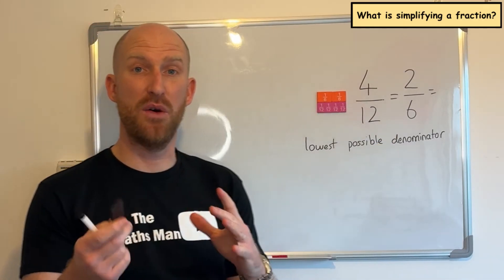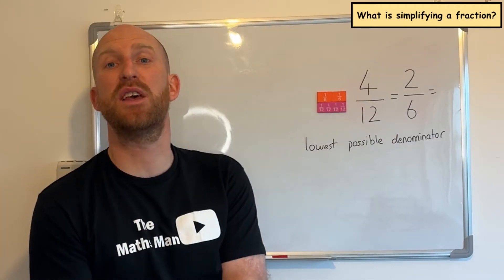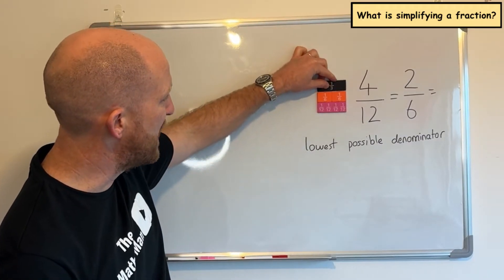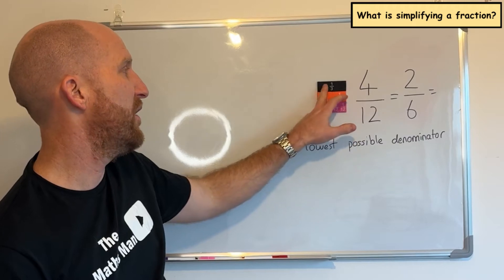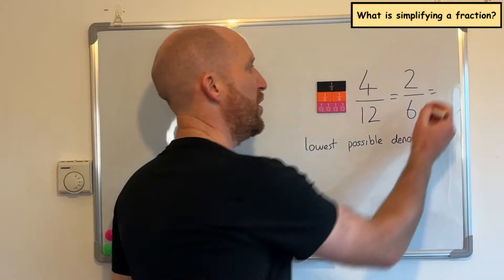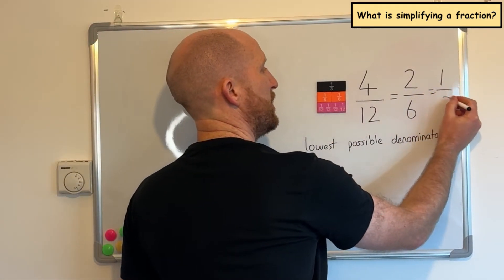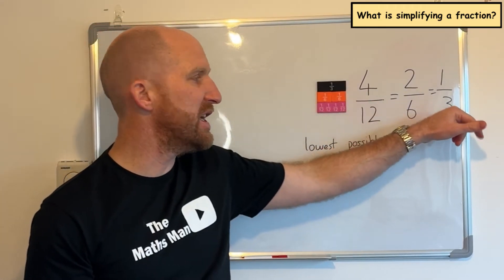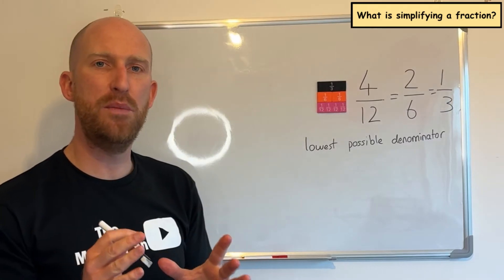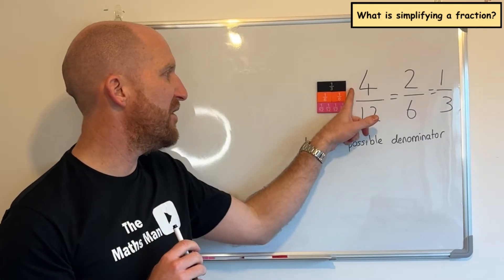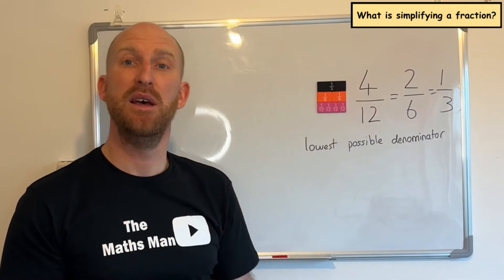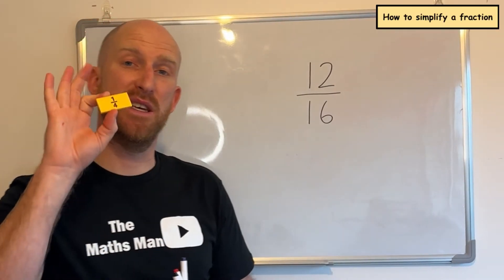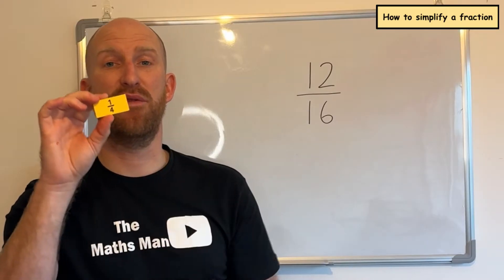I can actually go a step further here, and this is quite often the case with a lot of fractions when you're simplifying them. I can actually also represent 4 twelfths as one third — one piece, one larger piece. In this instance, one third is the lowest possible form that we can simplify 4 twelfths to be, and that's a real key phrase: lowest form. Simplifying fractions is really easy when you have the benefit of using fraction tiles.